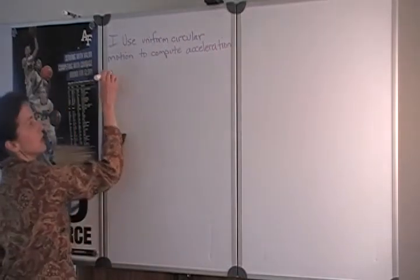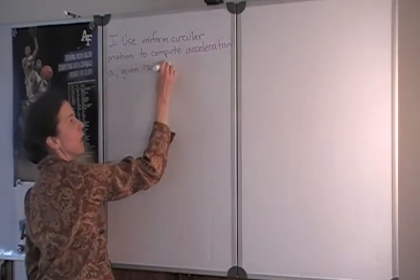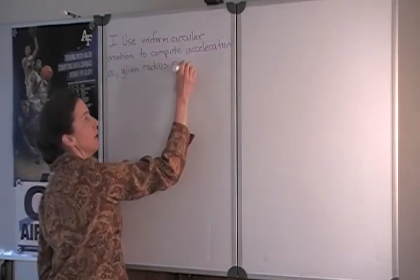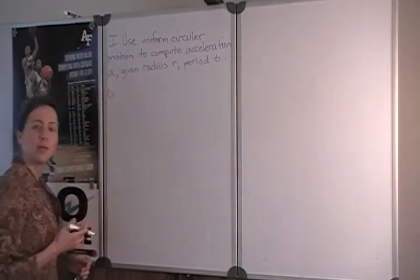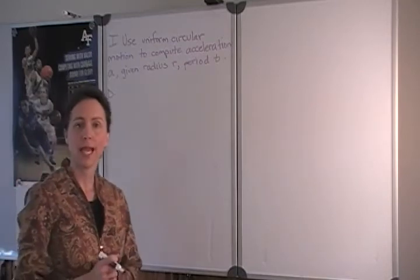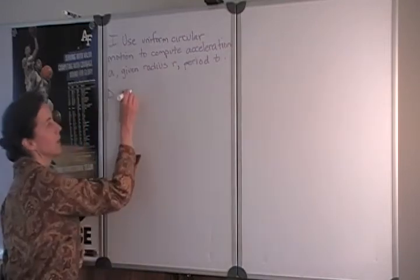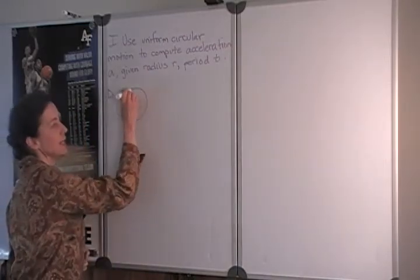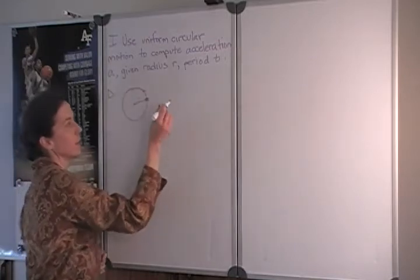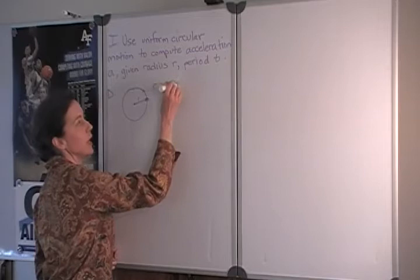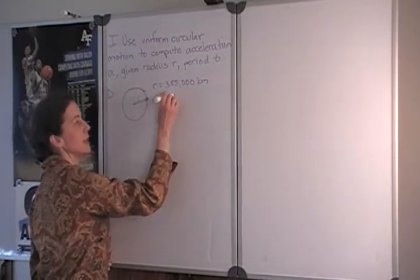We will use the symbol a for acceleration and we've been given the radius which we'll call R and the period which we'll call T. As we develop this problem we'll draw a sketch to represent what's happening physically then we'll make a point by point plan to follow when we evaluate the problem. We are told that the orbit is nearly circular so our mathematics can assume a circular orbit. We are given that the radius of that orbit is 385,000 kilometers and that the period is 27 days.